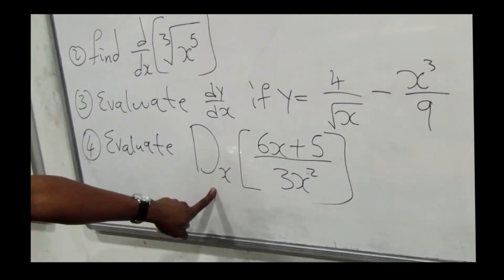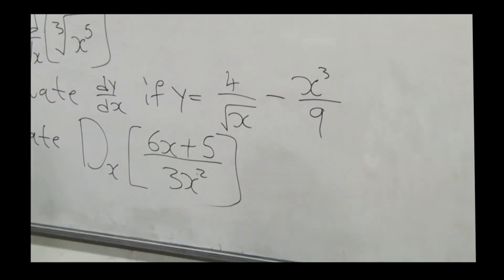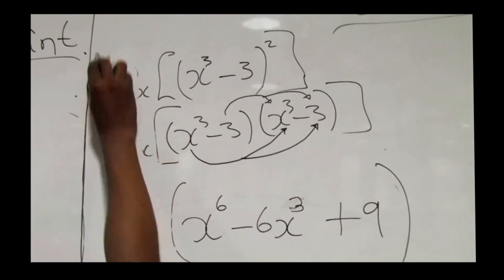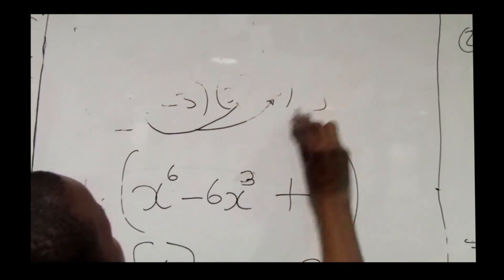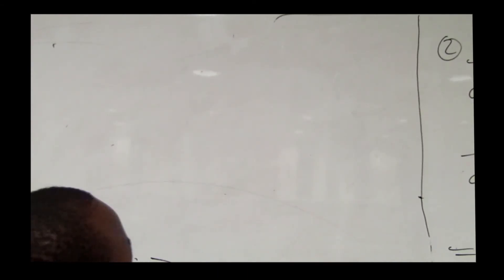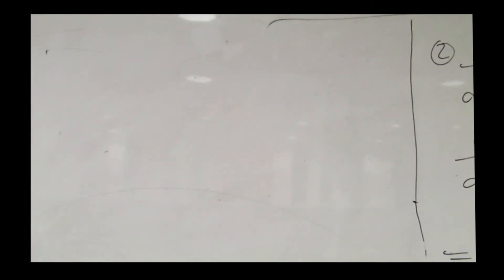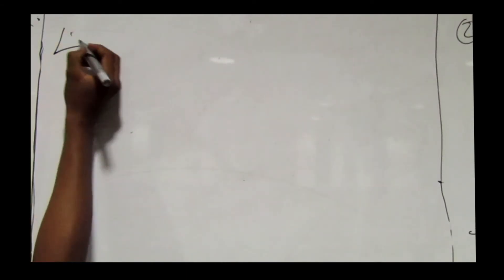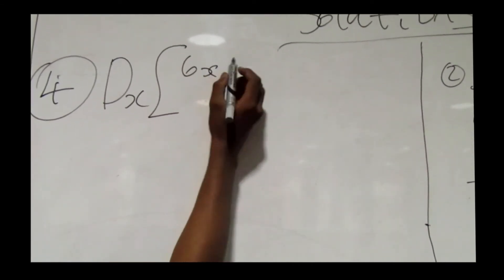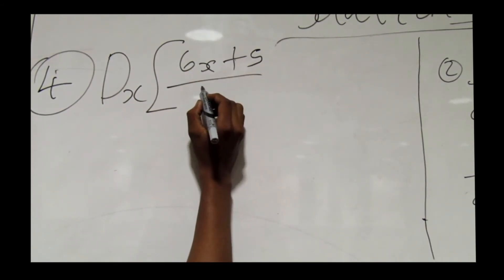Number four: evaluate d/dx of (6x + 5) divided by 3x squared. Let me write number four here: d/dx of (6x + 5) over 3x squared.